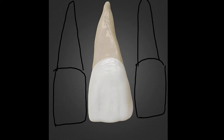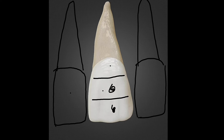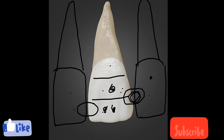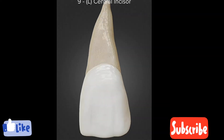The mesial contact area lies at the incisal third. If we divide the crown into three equal parts — cervical third, middle third, and incisal third — this tooth contacts the right central incisor at the incisal third. On the distal side, the contact area lies at the junction of the incisal and middle thirds, where it contacts the lateral incisor.